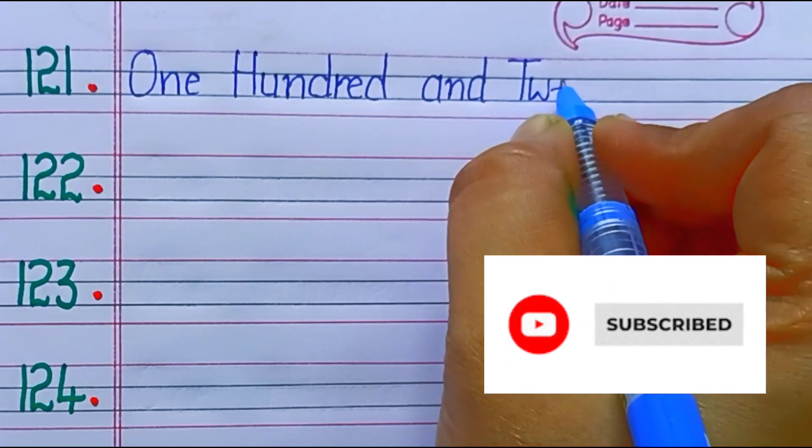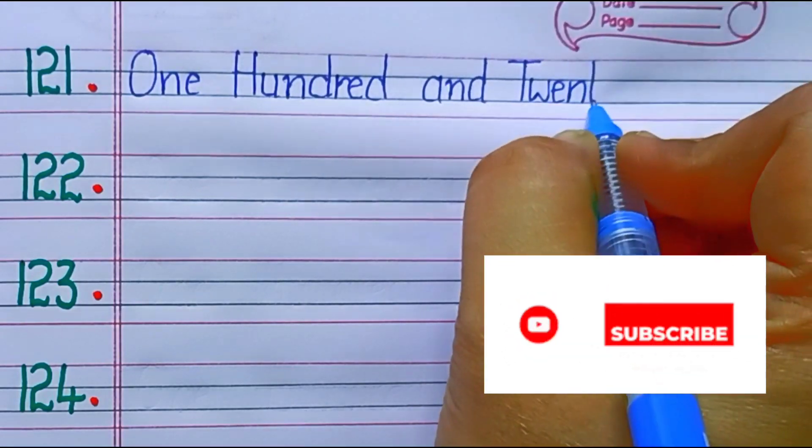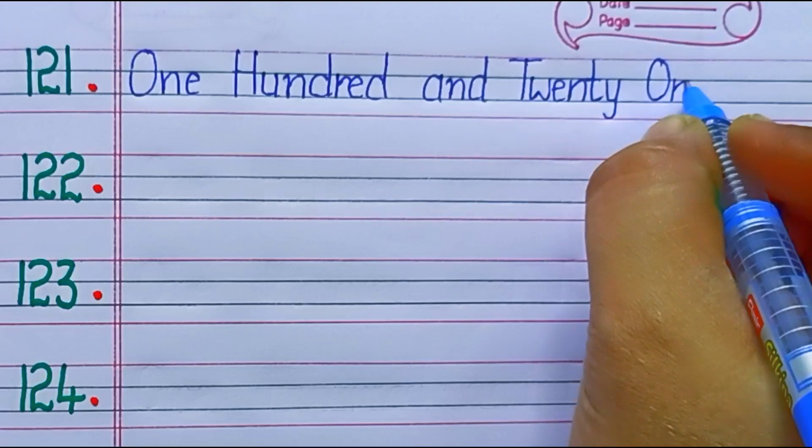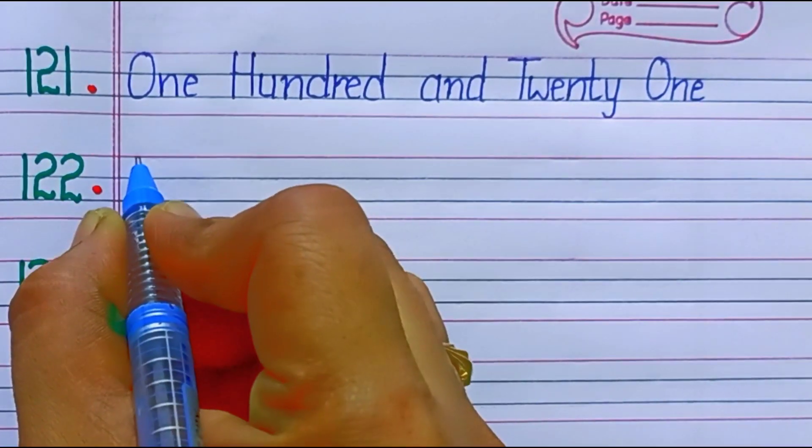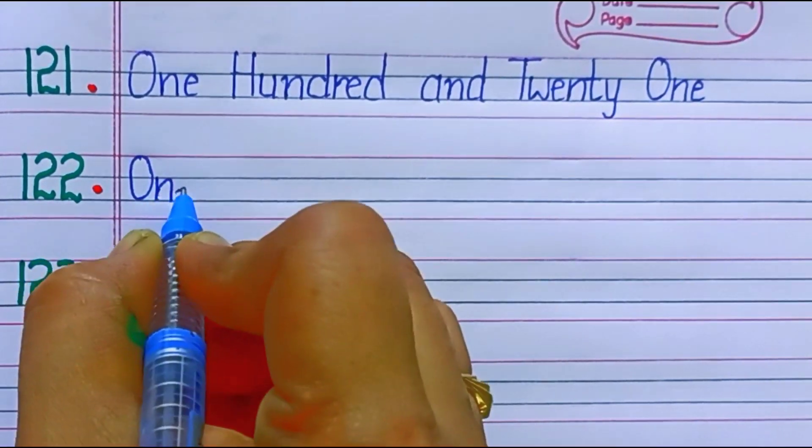121. One hundred twenty-one. T-W-E-N-T-Y, twenty. O-N-E, one.